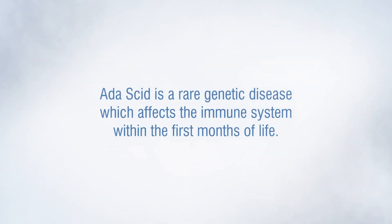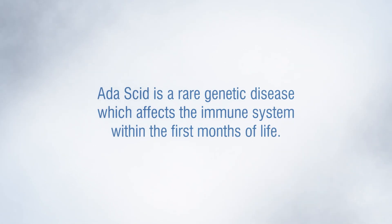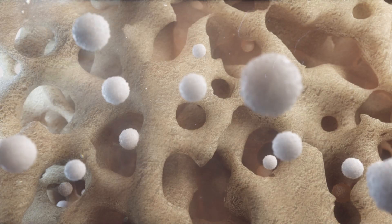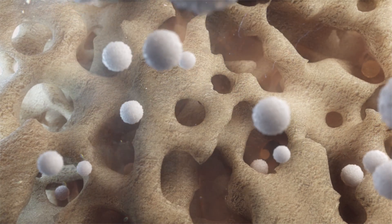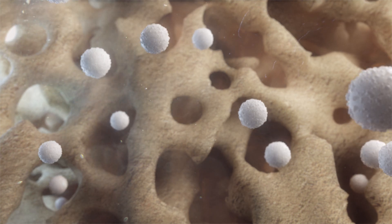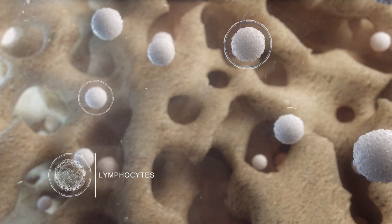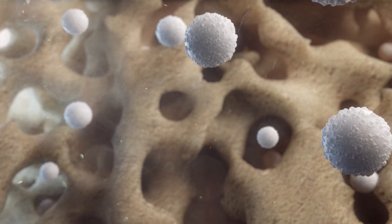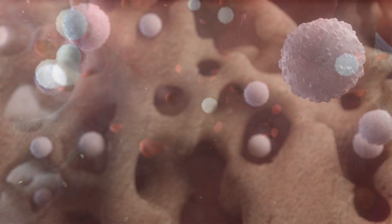ADA-SCID is a rare genetic disease which affects the immune system within the first months of life. Those children affected are missing a protein, adenosine deaminase, fundamental in producing lymphocytes, cells which are responsible for defending us against infective agents such as viruses, bacteria, or fungi.